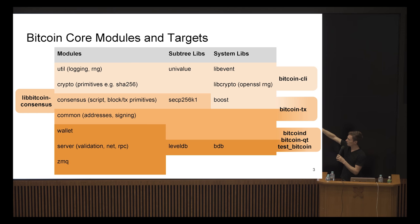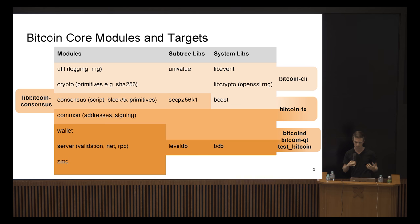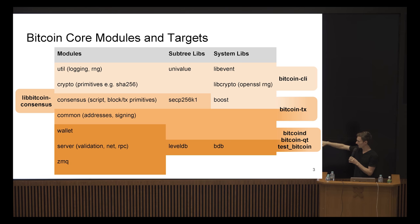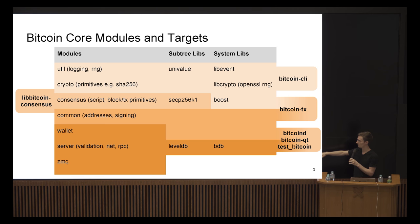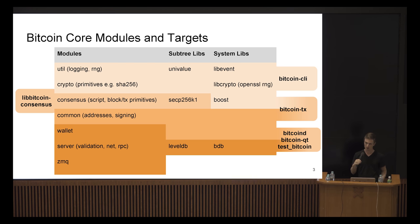We also have another target, bitcoin-tx, which is a utility to create or modify transactions. Finally there are all the other targets — this list is not exhaustive — but most of them depend on everything, including bitcoind, the server daemon that runs in the background, or bitcoin-qt which is the GUI, and then a ton of test binaries which also depend on pretty much everything.